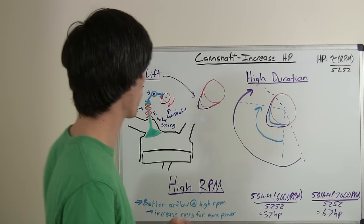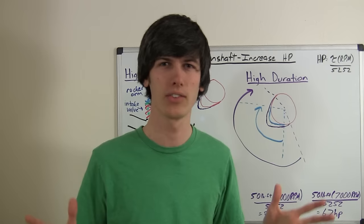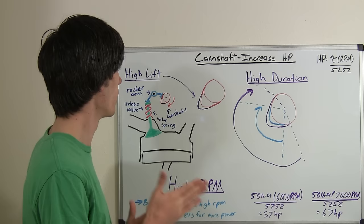Basically what I'm going to talk about are what I'm going to call the three highs of camshafts: high lift, high duration, and high RPM. Each one of these helps increase horsepower, so let's explain how.